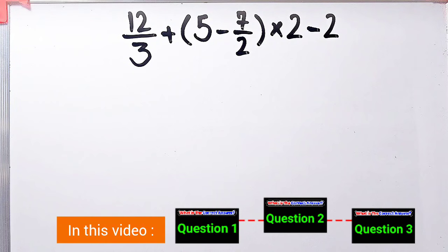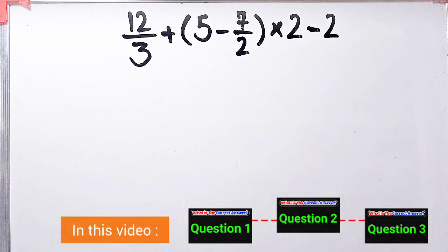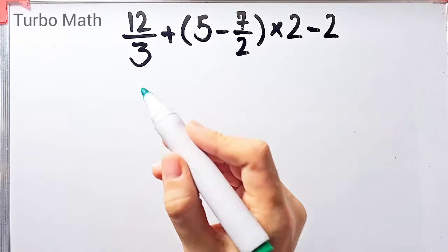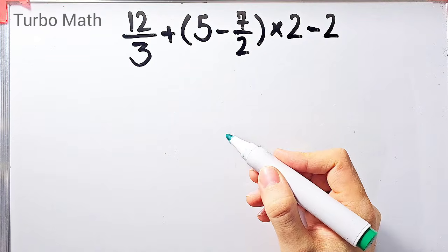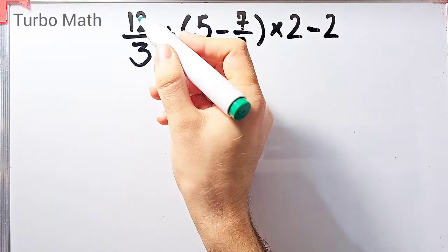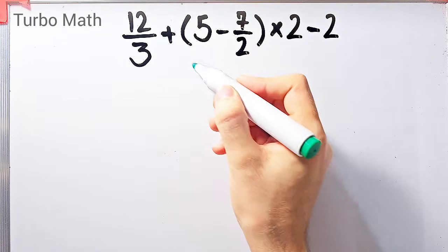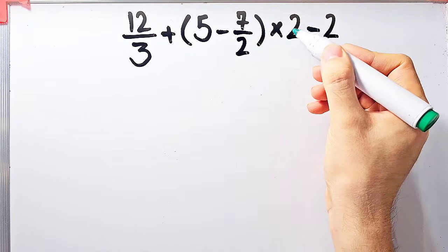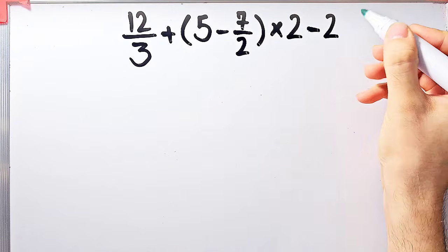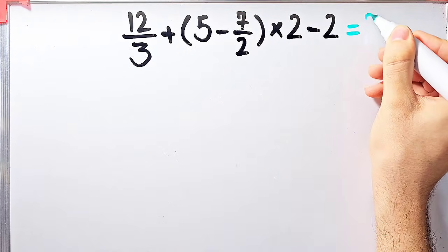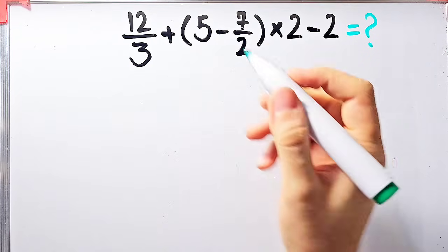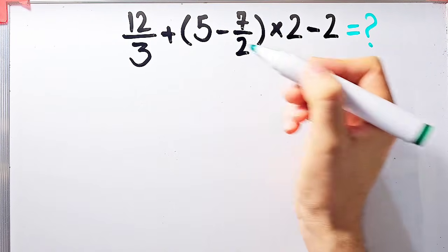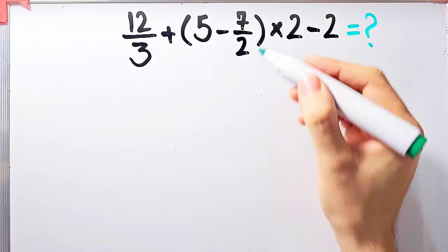Hi friends, welcome to Turbo Mass channel. In this video we are going to solve three questions about the PEMDAS rule. In the first question we have 12 over 3 plus open parentheses 5 minus 7 over 2 close parentheses times 2, then minus 2. In this question we have addition, parentheses, subtraction, and multiplication.